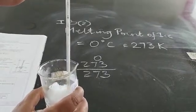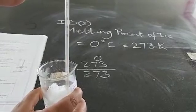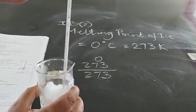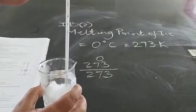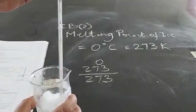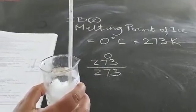The bulb of the thermometer should be dipping completely in the ice. Sometimes we don't get it completely to zero because there are impurities present in the ice.